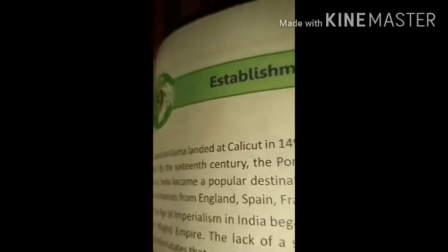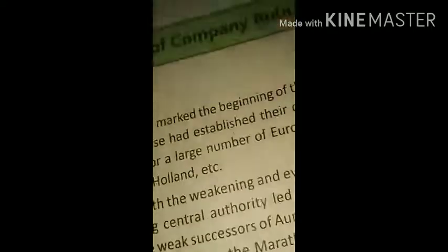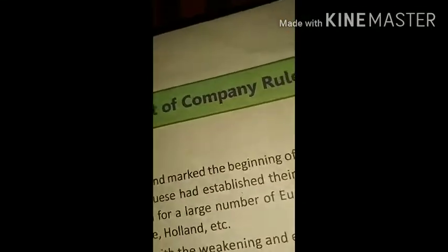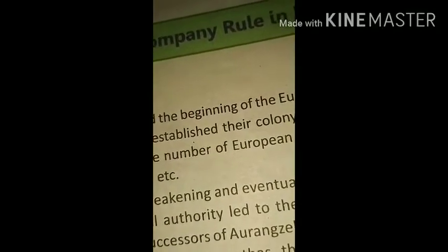We are going to study about how the company — here the company means the East India Company — which was just a trading company. In the 18th century, India's political situation was not stable because there was no ruler who could unite the whole of India and manage such a vast empire.